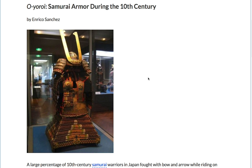Alright, so this whole passage is about the armor worn by mounted archer samurai of 10th century Japan — Ōyoroi — and how it's constructed. So this is a piece of Ōyoroi armor. This is the whole assemblage.